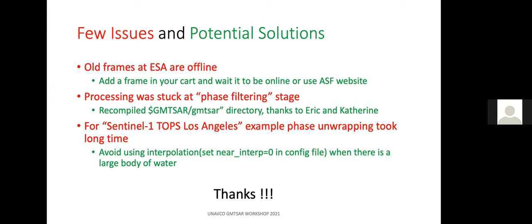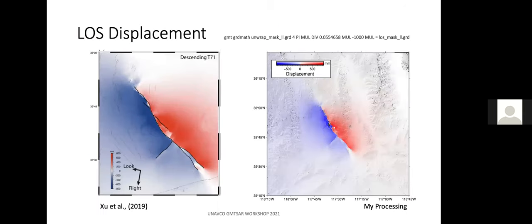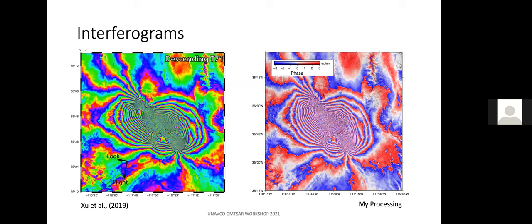Any questions? Thanks — that's interesting. A quick question on the wrapped phase: it looks like there are some subtle differences. It looks like the reference image is filtered more than yours. If you look at the lower right-hand corner — did you apply a phase filter? I did, yeah, I'll have to look at what value I used. His looks a little more filtered than yours, I think, but that's my only thought.